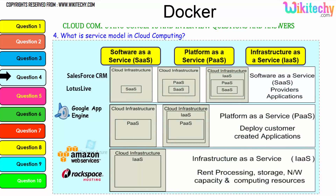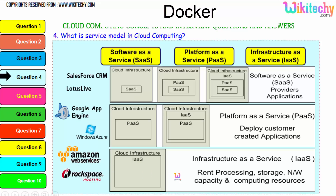Further explaining the models: Software as a Service has cloud infrastructure, with the software placed in the operating system which is placed in the infrastructure. For Platform as a Service, the platform is given to you on your server — you can put any application or software you want. For Infrastructure as a Service, the server is given to you and you can put any OS and application you want. Examples include Lotus Live and Salesforce CRM for SaaS; Windows Azure and Google App Engine for PaaS; Amazon Web Services and Rackspace Hosting for IaaS.